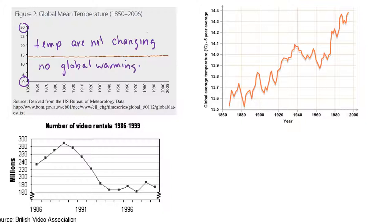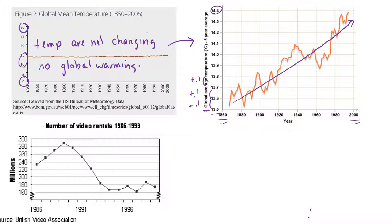This graph tells a story, but the actual changes in global temperature are only between 13 and 15 degrees - there's no change between zero and 13, and nothing between 15 and 30; that's all white space. So if we re-plot the same data but start the y-axis at 13.5 and go up in even 0.1 jumps to 14.4, we can see the data going up and down but with a general upward trend between 1860 and 2000, showing that temperature is increasing.